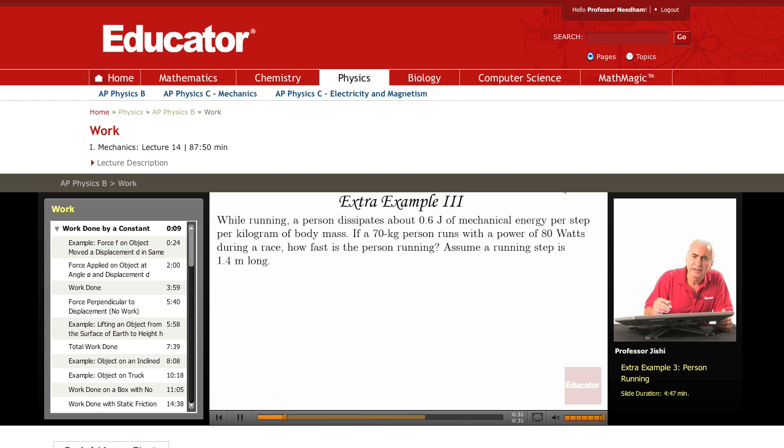Okay, first of all, let us find how much mechanical energy is dissipated per step. So, mechanical energy dissipated per step. Since the person is 70 kilograms, and the person dissipates 0.6 joules per kilogram per step, so this energy is 0.6 times 70.